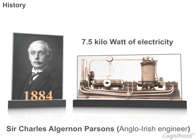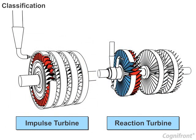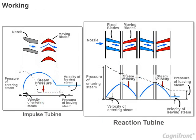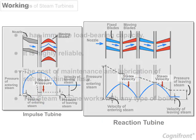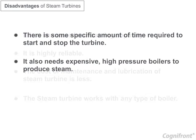In this session we learned about the history of steam turbines, classification of steam turbines, the working of impulse and reaction turbines, then we went through the advantages and disadvantages of steam turbines, and finally we listed the applications of steam turbines.